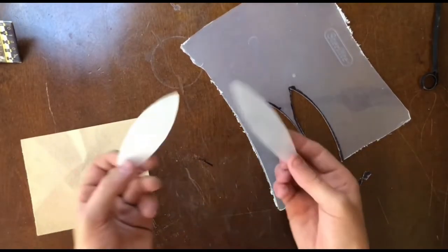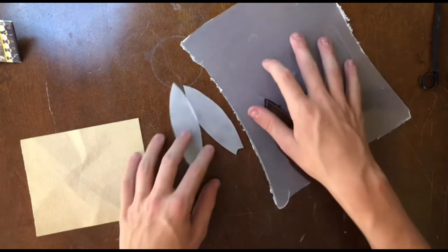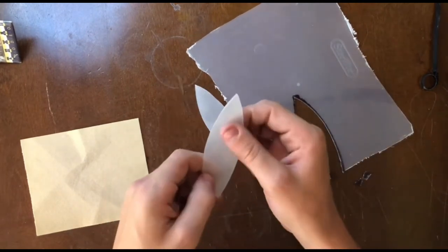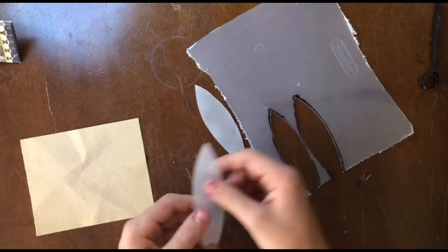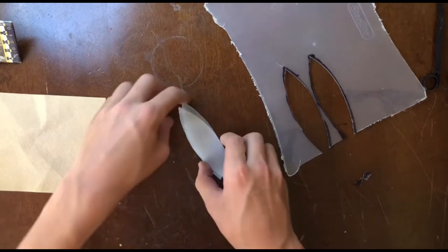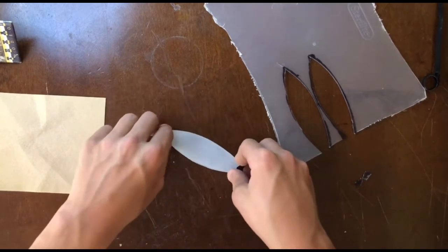Now that I'm done sanding, it should look foggier than the original plastic that you cut it out of. And it should feel rough. Now that I have this, I'm going to glue these together and try to get it pretty perfect.